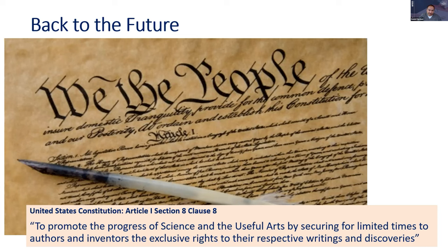If you were to publish your novel later today after this talk, and on your way home you were in a tragic car accident and died unexpectedly, the copyright in that book wouldn't expire until the year 2093 — an additional 70 years of life. And if you go on to live a much longer life and don't die prematurely, you get all the added years of your lifespan on top of that. So it's a very, very long term of copyright.